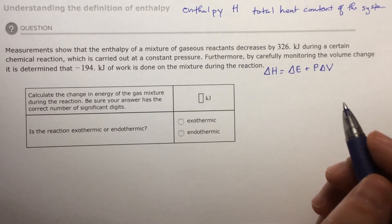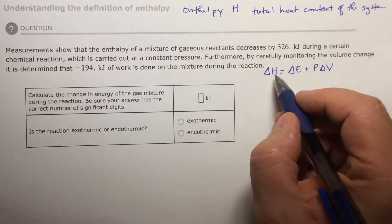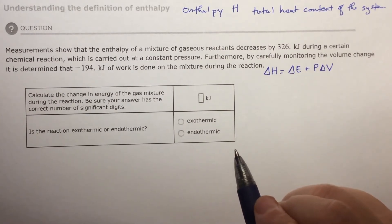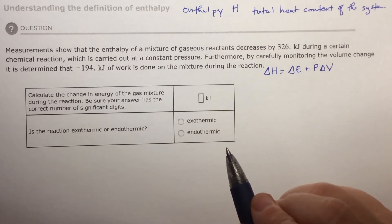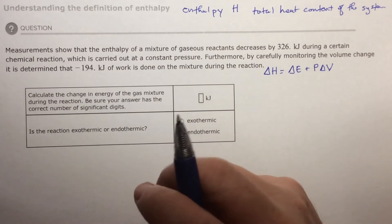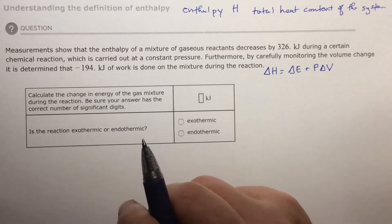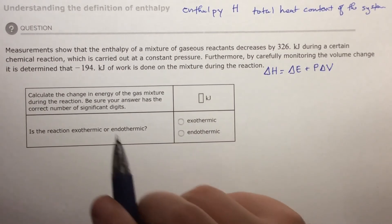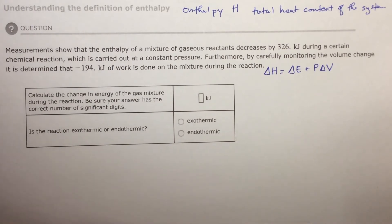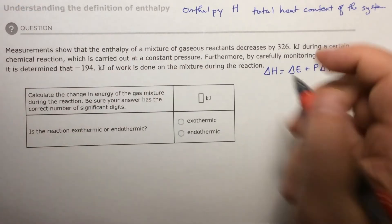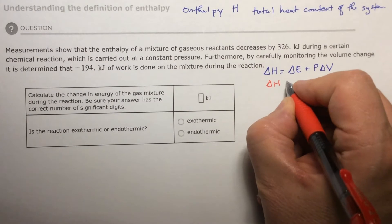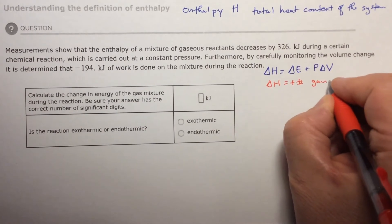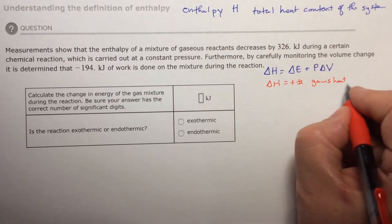If delta H is positive, then heat has been gained in the system. So if the reactant is the system, energy has been put into those bonds — there's more energy stored in the bonds at the end of a reaction than at the beginning. If delta H is a positive number, it gains heat, and that's called endothermic.